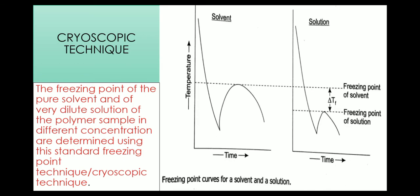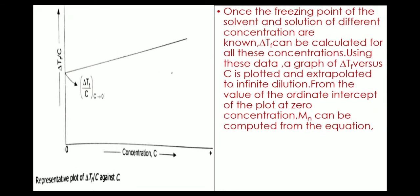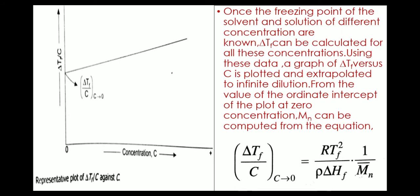By knowing the freezing point of the solvent and solution at different concentrations, delta Tf can be calculated for these concentrations. Using this data, a plot of delta Tf versus C is plotted. We can see from the graph that delta Tf plotted against concentration is extrapolated to infinite dilution, i.e. zero concentration. From the ordinate intercept at zero concentration, the number average molecular weight can be determined using the equation: (delta Tf / C) as C tends to zero equals R·Tf² / (delta Hf · rho) × (1/Mn̄).